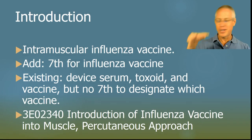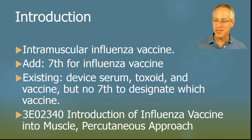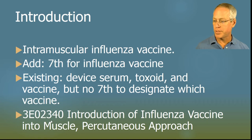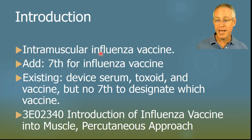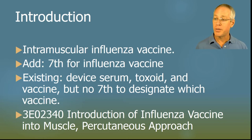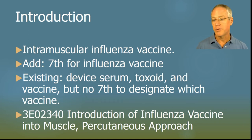This is probably one of the most commonly used new codes: we've added the influenza vaccine in the PCS administration section. In the introduction root operation, we add a seventh character for the influenza vaccine. The substance value is serum, toxoid, or vaccine classification. Only influenza was added — this is clearly meant to satisfy inpatient quality measures requiring hospitals to administer flu shots to eligible admitted patients. If your facility wants to capture this, raise your hand and ask whether you need to start looking for it. The code is 3E02340.